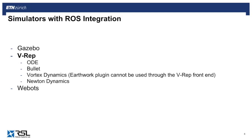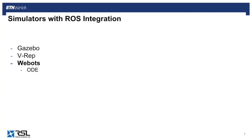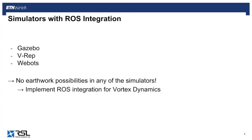VRAP also has ODE and Bullet, and additionally Vortex and Newton Dynamics. Vortex is the one I'll show as the solution to our problem, but integrated into VRAP it doesn't allow us to use the earthwork plugin because it's not routed through the front end. WebOt on the other hand only has ODE in the background, and I think it's also not free — it might be free if you're at ETH. So there's no simulator around that has any ROS integration that we could use for our excavator, and this is the reason why I did the ROS integration for the Vortex Dynamics simulation framework.